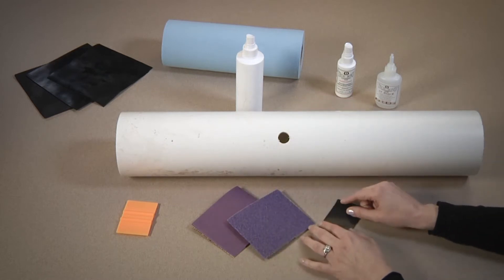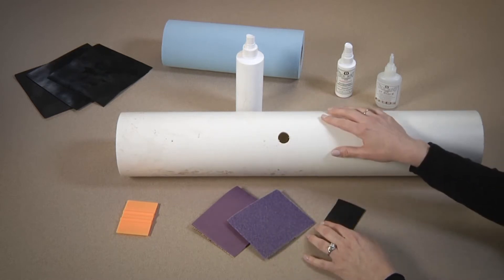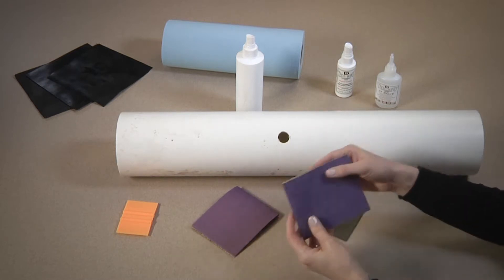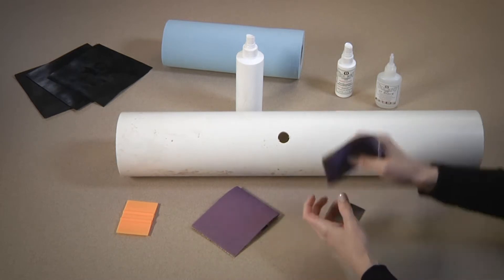Surface prep is critical. With PVC, plastic, and poly pipes or containers, you can use sandpaper with anywhere between 60 and 400 grit.